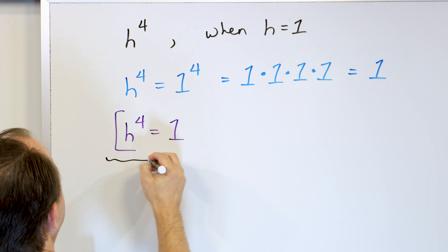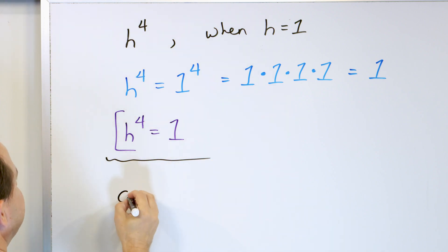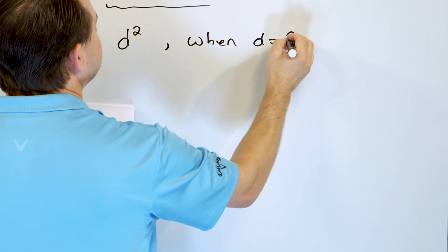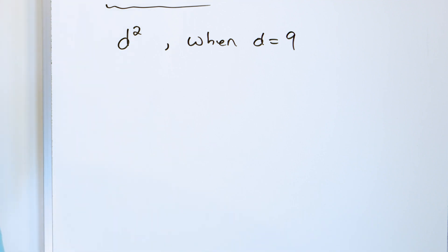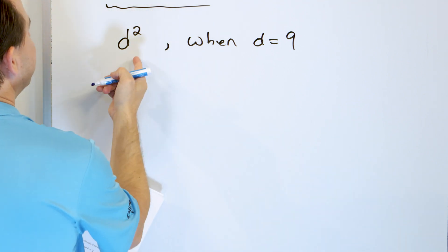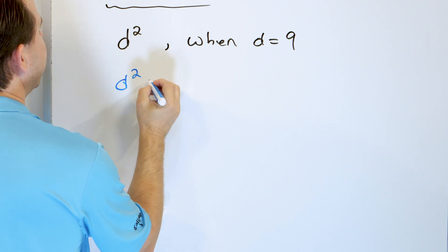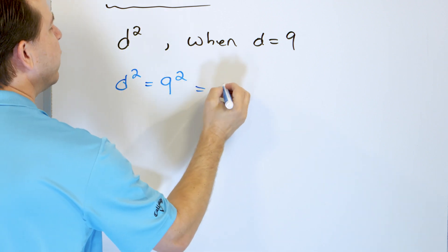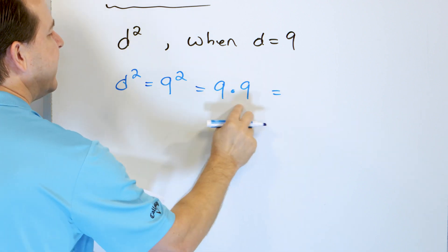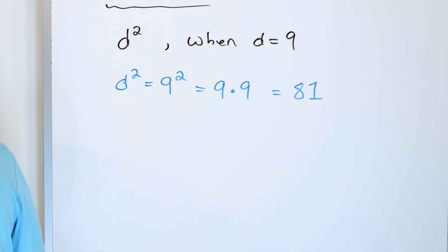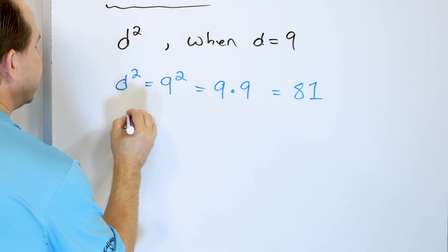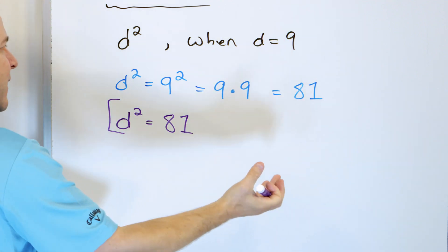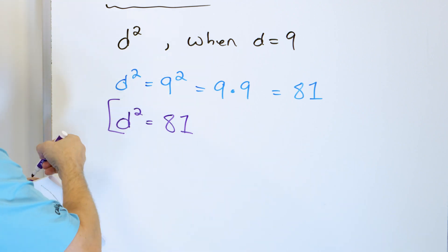Let's calculate the value of D squared when D, the variable, is equal to 9. Notice you can use any letter for variables — there's nothing better than another. I'll start with D squared. When D is 9, that means 9 can go right in there, giving 9 squared. But 9 squared is 9 times 9, and 9 times 9 is 81. So what I've figured out is that D squared is equal to 81 — of course, only when D is 9. Stick that 9 in there, 9 times 9 is 81, it makes sense.